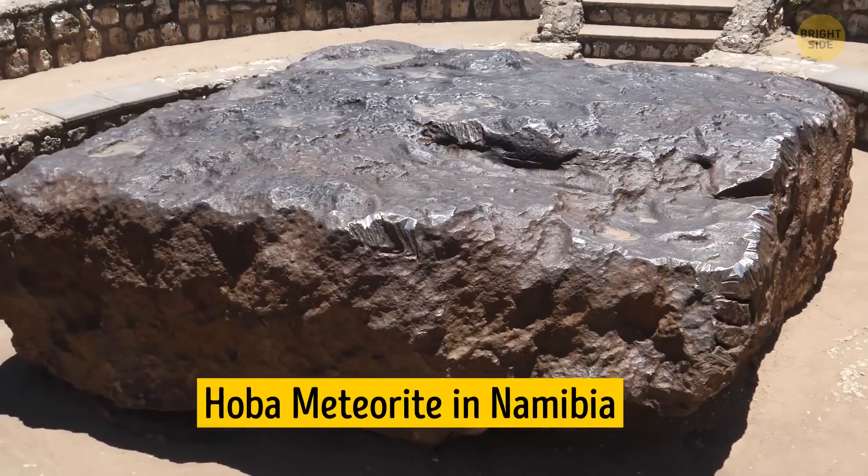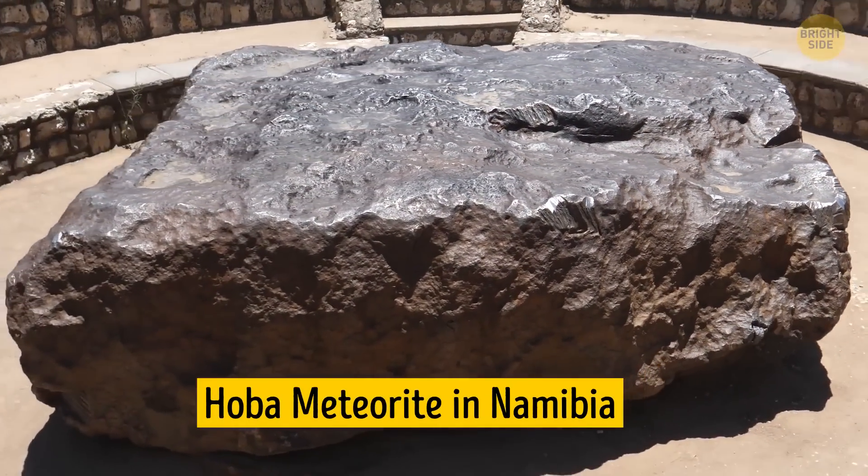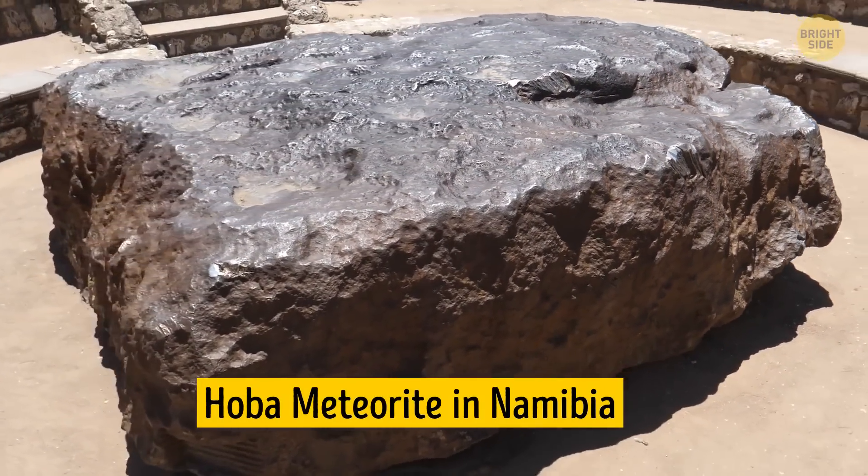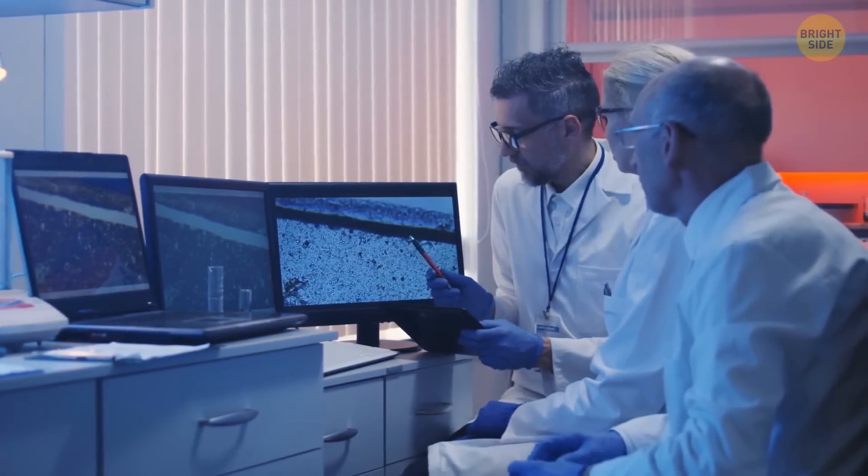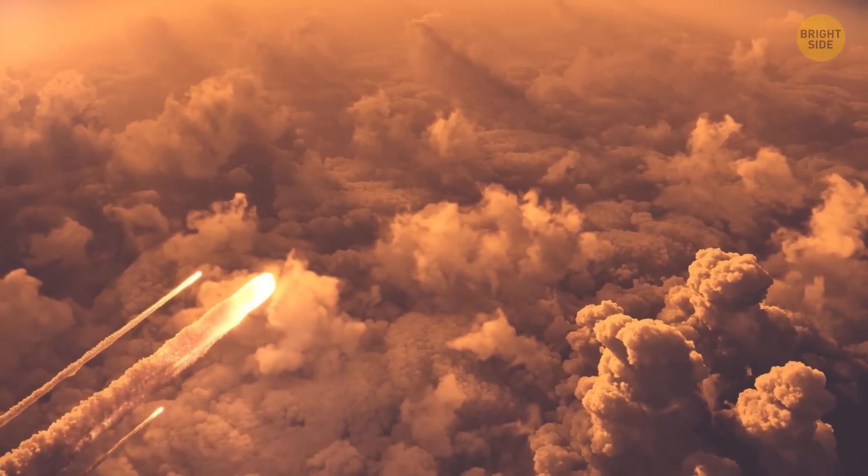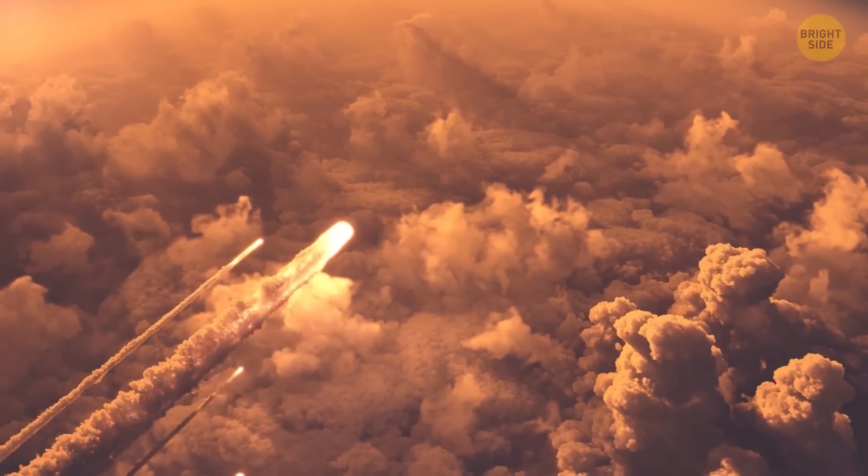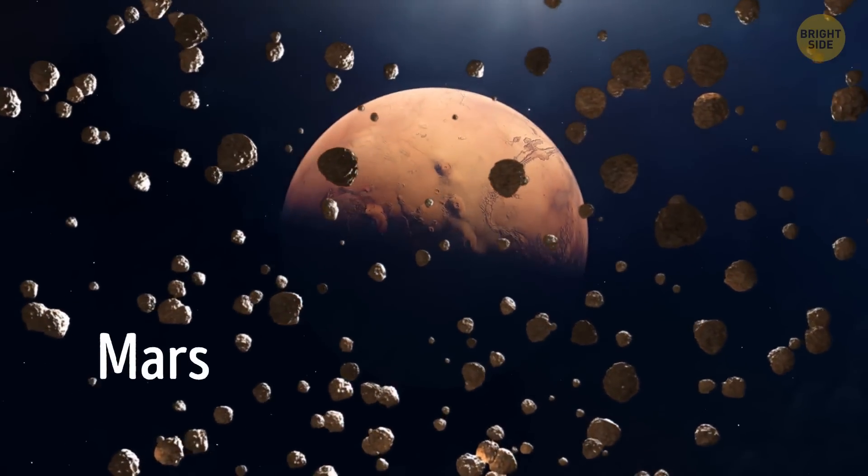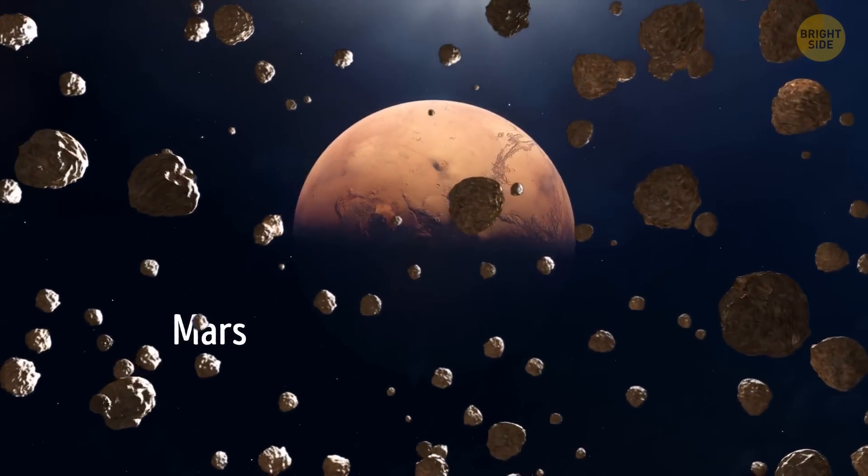At any given moment here on Earth, you can stumble across a rock that's arrived from Mars. After scientists analyzed the chemical content of some meteorites found in the Sahara Desert, Antarctica, and other places on our planet, they came to the shocking conclusion that they have a Martian origin.